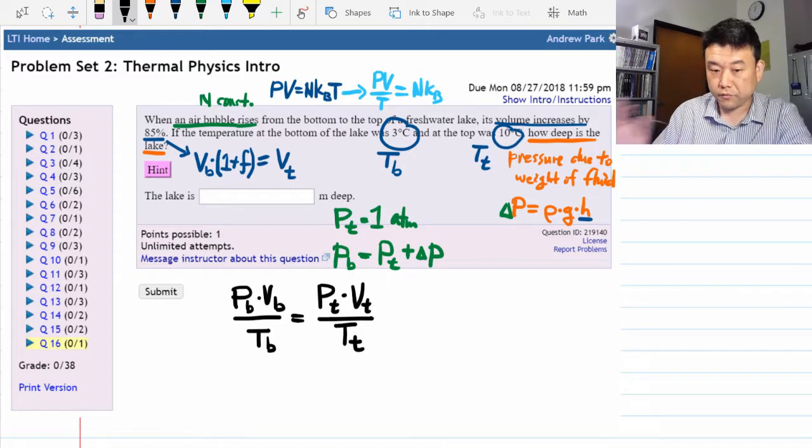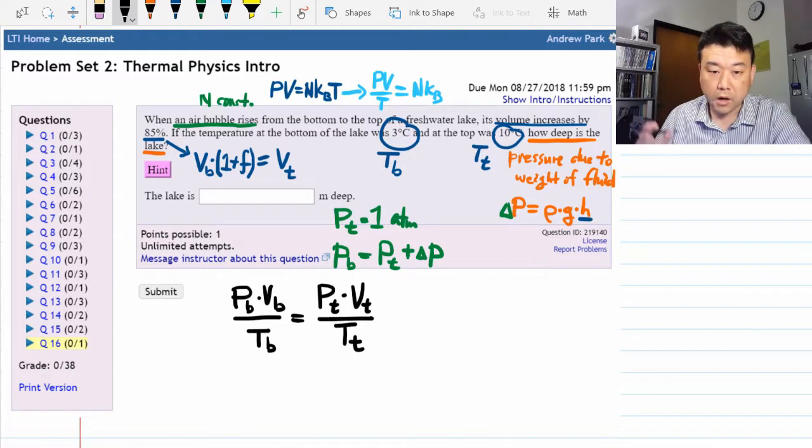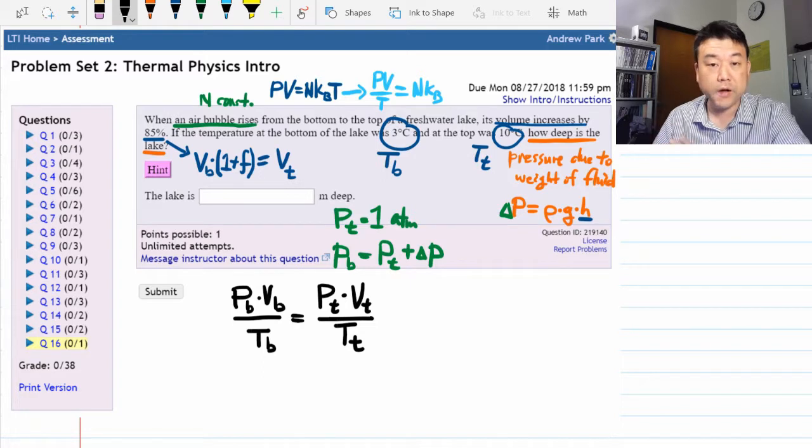So the temperature is given, so I won't really worry about that. The volume isn't given, but I can put the volume in ratios and I think I know how to handle that.